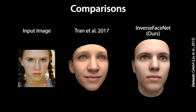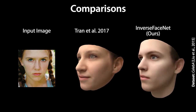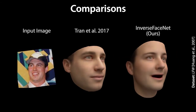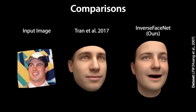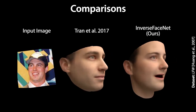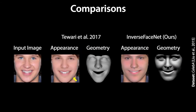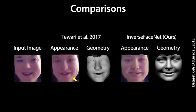The approach of Tran and colleagues is targeted at face recognition and hence only recovers colored shape without facial expressions or illumination. Our results are comparable to Tavaria and colleagues, but we avoid the geometric shrinking seen in their results. Notice that their estimated geometry is visibly thinner than the input faces.